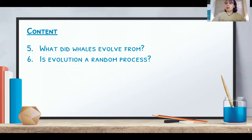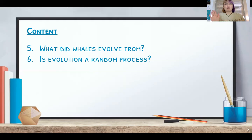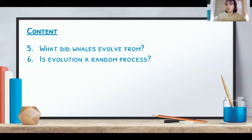Natural selection is simply whichever organism can survive and pass on its genes. Think about the Arctic tundra: brown rabbits and white rabbits. The white rabbits survive because they blend into the background, while the brown rabbits die out. But those same rabbits in a forest? The white rabbit stands out and won't live long enough to pass its trait on.